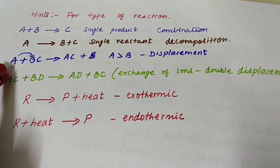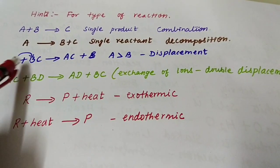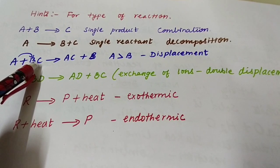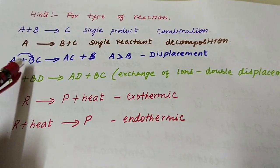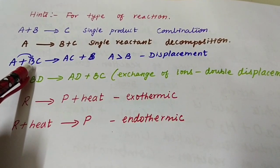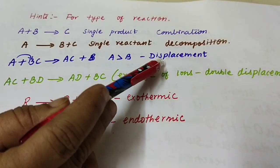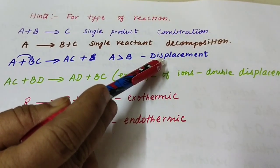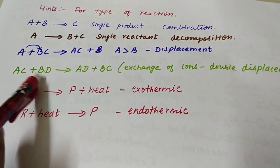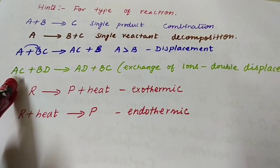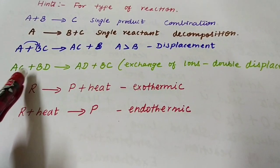If A + BC → AC + B, and metal A is more reactive than B, then a displacement reaction takes place — A displaces B. So it is a displacement reaction.